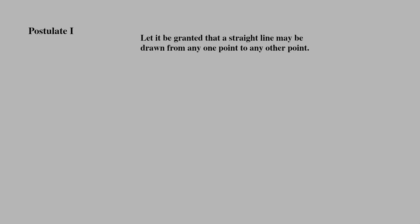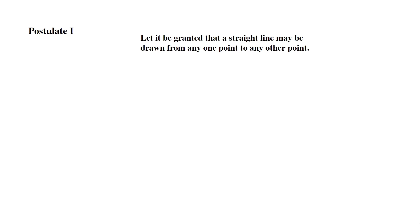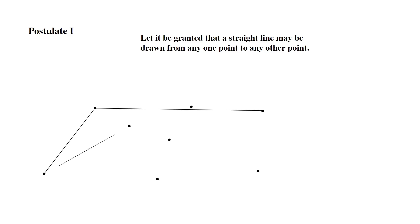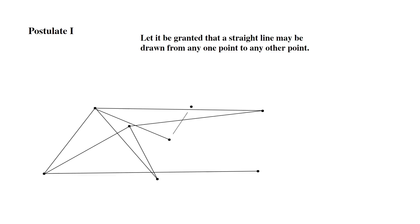Alright, so here we have Postulate 1: Let it be granted that a straight line may be drawn from any one point to any other point. Let's get some random points on the screen. Afterwards, we can see that we can draw a line from any one point to any other point.